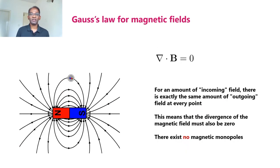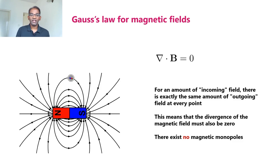Now we come to Gauss's law for magnetic fields. This law states that del dot B equal to zero, or the divergence of magnetic field is zero. To explain that, let us consider a bar magnet. In the case of a bar magnet, magnetic field lines will be starting from the north pole and ending at the south pole externally, whereas the field lines will start from the south pole and end at the north pole internally.